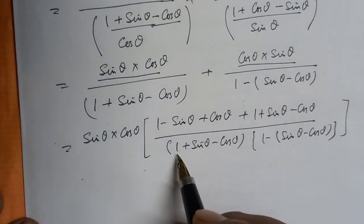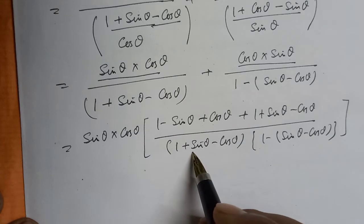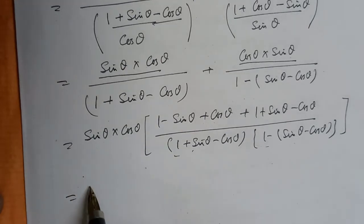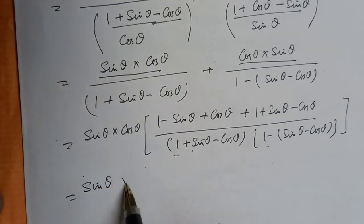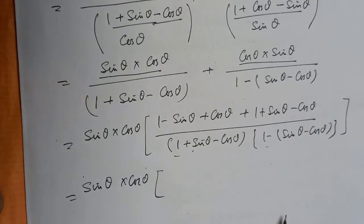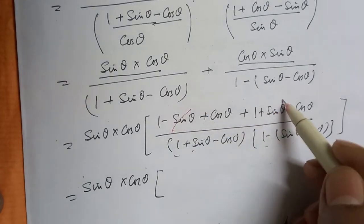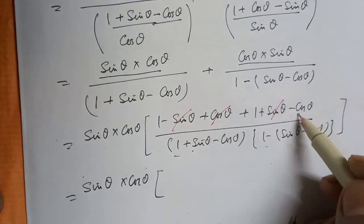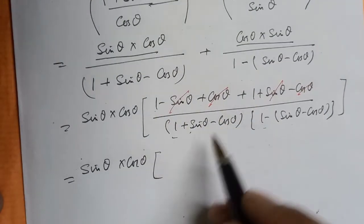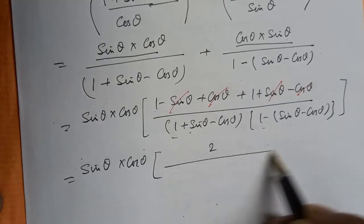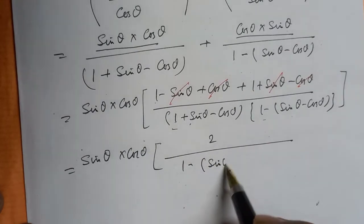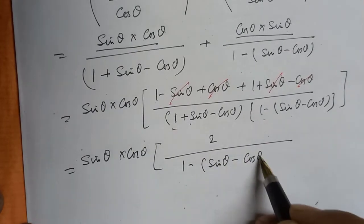We note that (1 + sinθ - cosθ)(1 - sinθ + cosθ) is of the form A·B, and the denominator can be written as a difference of squares: 1² - (sinθ - cosθ)², which equals 1 minus (sinθ - cosθ) whole square.